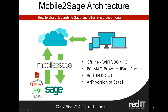So what's Mobile2Sage? Mobile2Sage is a series of iPhone and iPad apps that allows you to share office information with people on the road, so predominantly with iPhones and iPads, but you can use it on PCs, Macs, or a browser. It works online and offline, it can use the cellular networks, and it works with both data in and out of Sage, on any version of Sage.